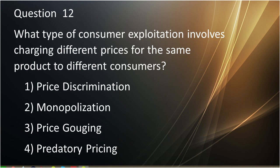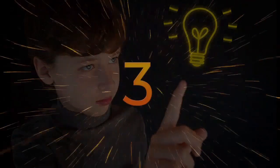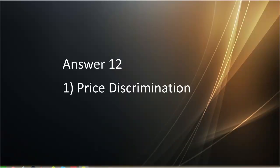Question number twelve: What type of consumer exploitation involves charging different prices for the same product to different consumers? First is price discrimination. Second is monopolization. Third is price gauging. Fourth is predatory pricing. Answer to question number twelve is price discrimination.